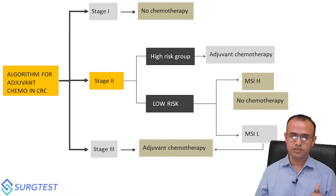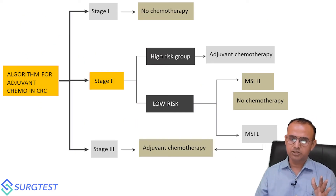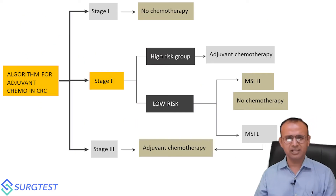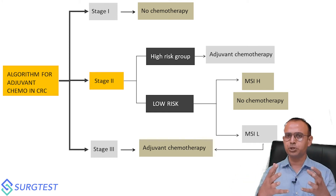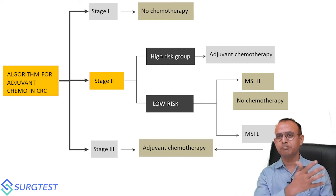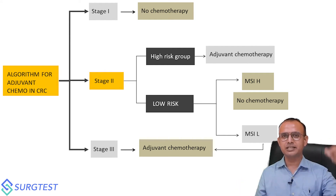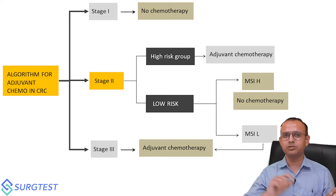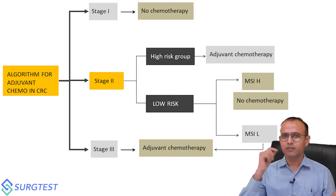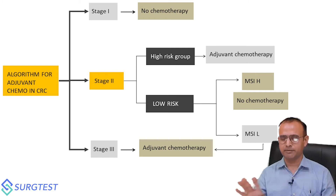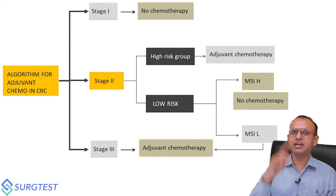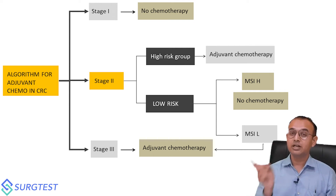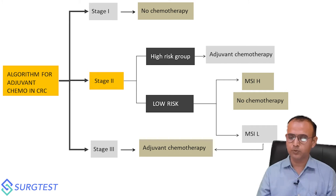In the algorithm: if the patient is stage one, it is very clear — no need of chemotherapy. If a question presents a colon cancer case where a right hemicolectomy was done and the pathologist reports stage one, the answer is no adjuvant chemotherapy. In stage three, it is also very clear — chemotherapy is definitely needed. In stage two, we have to decide based on risk.